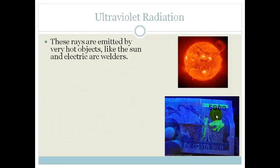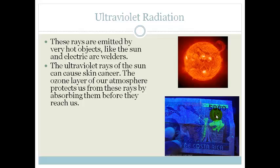Ultraviolet radiation. These rays are emitted by very hot objects such as the sun and electric arc welders. The ultraviolet rays from the sun can cause skin cancer, which is why we always say you have to use lots of sun protection and be careful of UV radiation. The ozone layer of our atmosphere protects us from these rays by absorbing them before they reach us, which is why ozone depletion — the thinning of the ozone layer — is a very important issue.